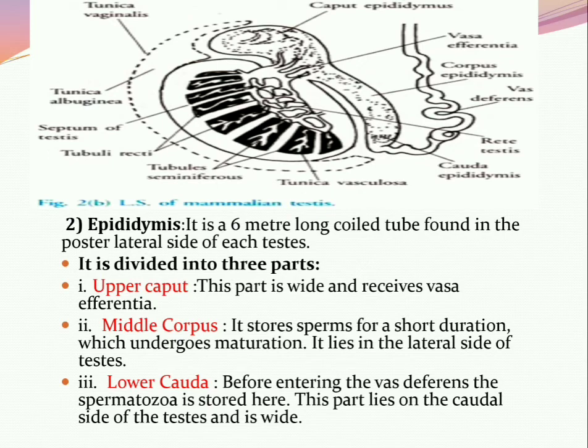The epididymis consists of three regions — caput, corpus, and cauda. The corpus is the middle region and serves as the maturation site of the sperm. The cauda is where sperms are temporarily stored before passing into the vas deferens.